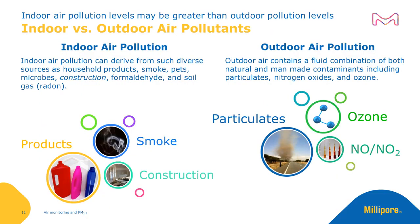Certain air pollutants occur more frequently indoors than outdoors, and vice versa. Indoor air pollution levels may actually be greater than outdoor pollution levels and pose a greater risk to personal safety. Indoor air pollutants can include household products, smoke, pet dander, microbes, construction byproducts, formaldehyde, and radon. Outdoor air pollution is more likely to contain particulates as well as molecular contaminants like nitrogen oxides and ozone.